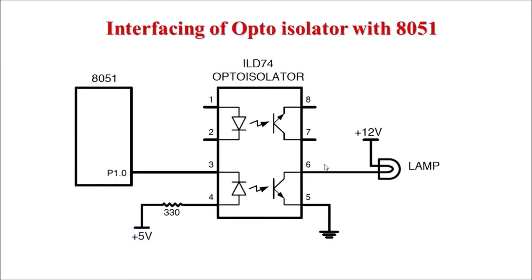Now let's go through the interfacing diagram of an optoisolator with the 8051 microcontroller. Here a lamp is used as a load. Whenever a signal is sent to this lamp through the optoisolator, it will turn on — this is a 12V lamp. When the optoisolator starts working, current flows through the phototransistor, the circuit completes, and the lamp turns on.